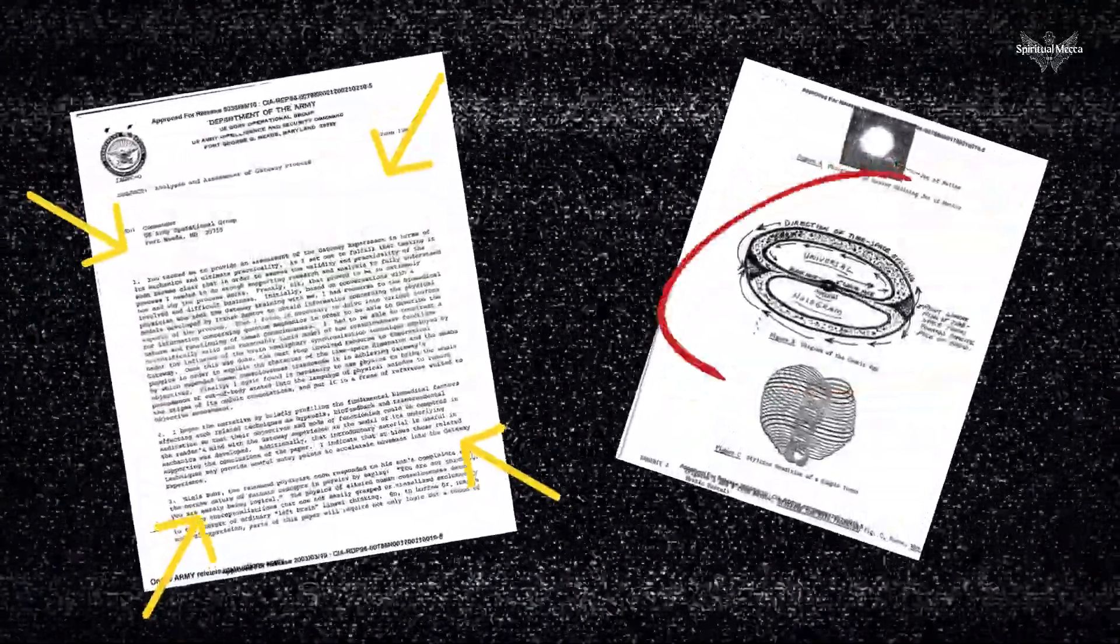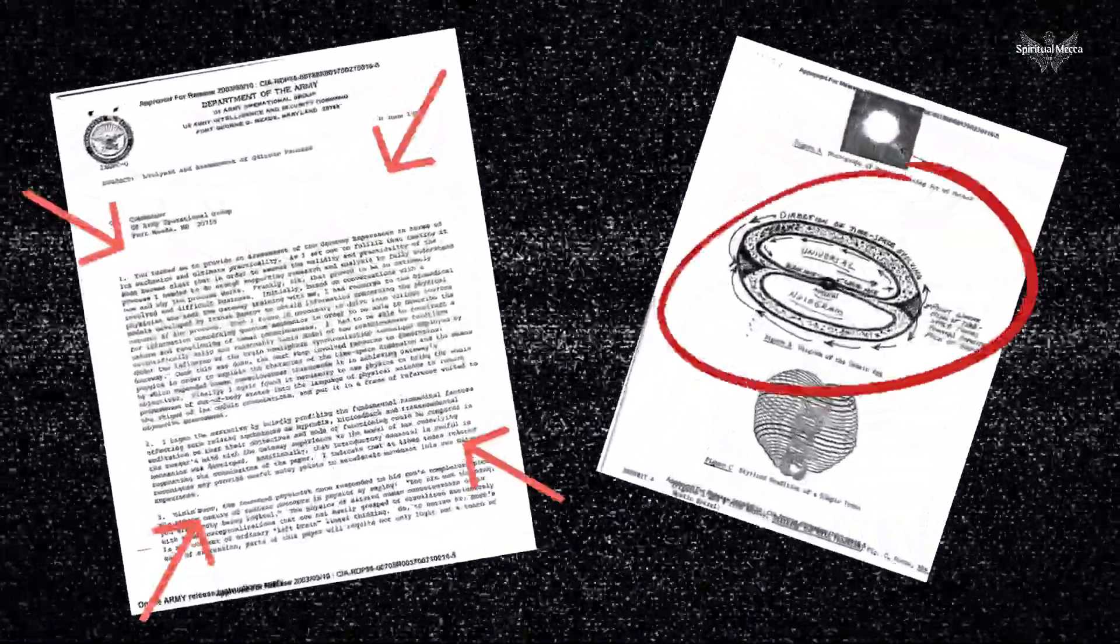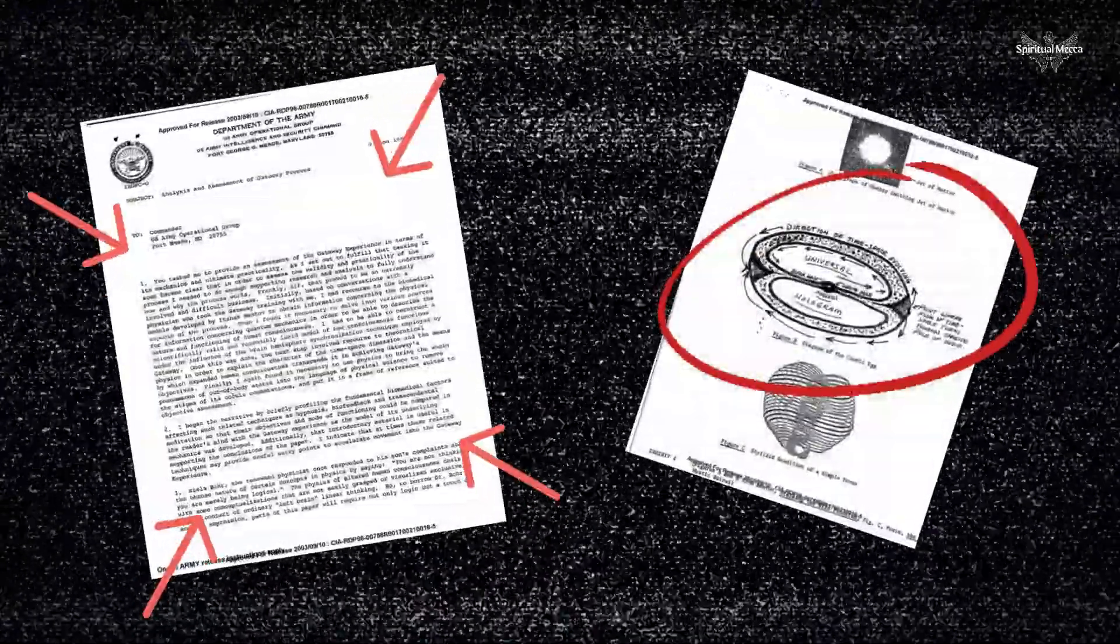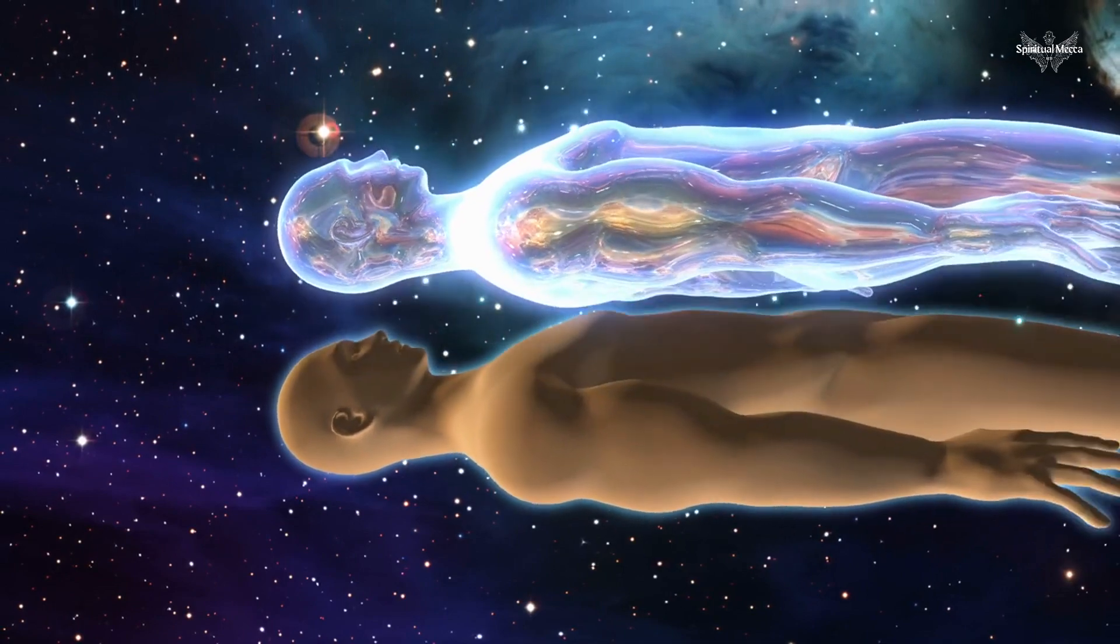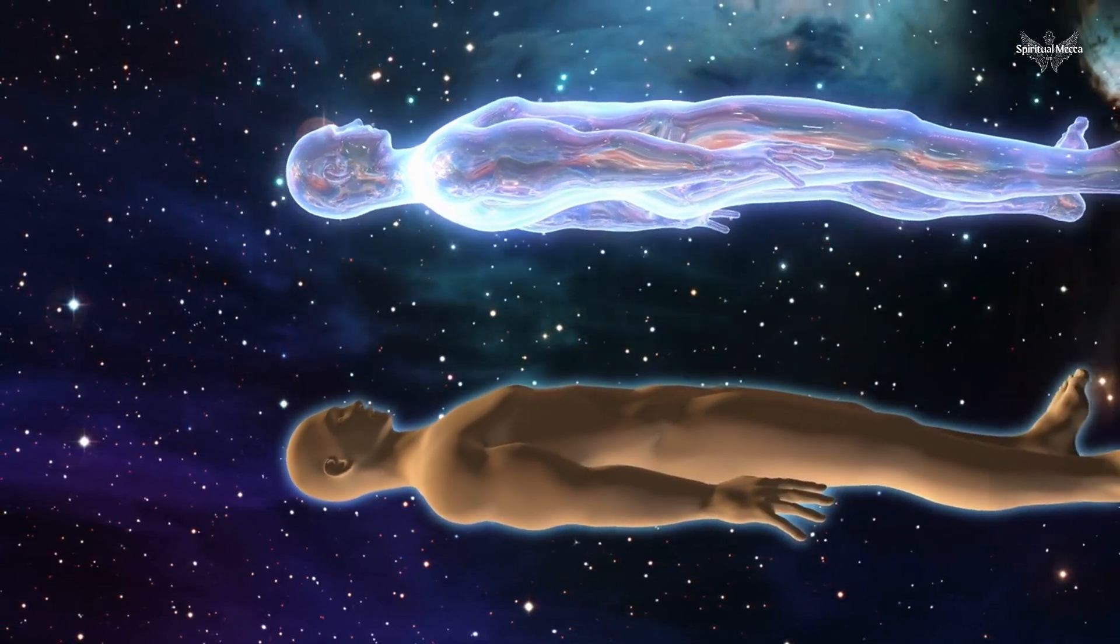In this video, we explore a declassified report from the CIA which confirms how to alter your consciousness. The CIA discreetly released their report from 1983, which confirms that we are living in an energy hologram.